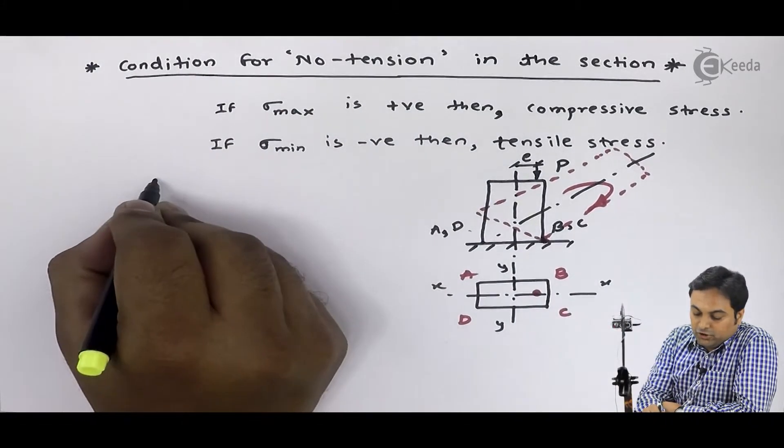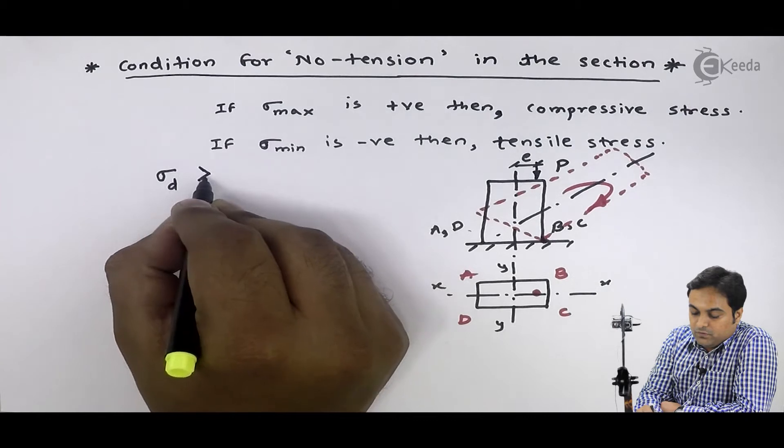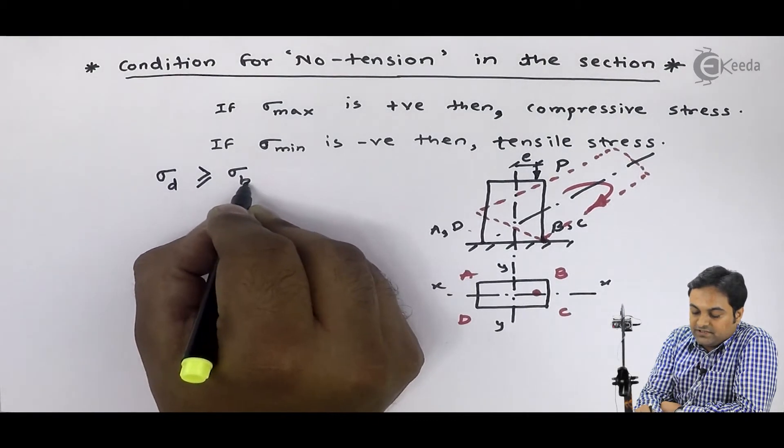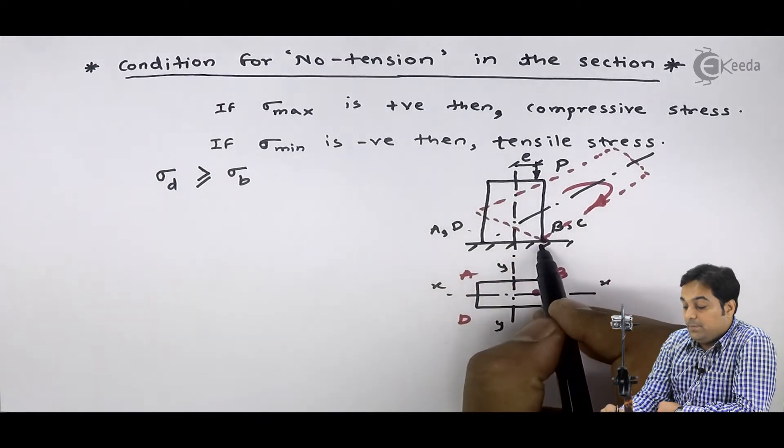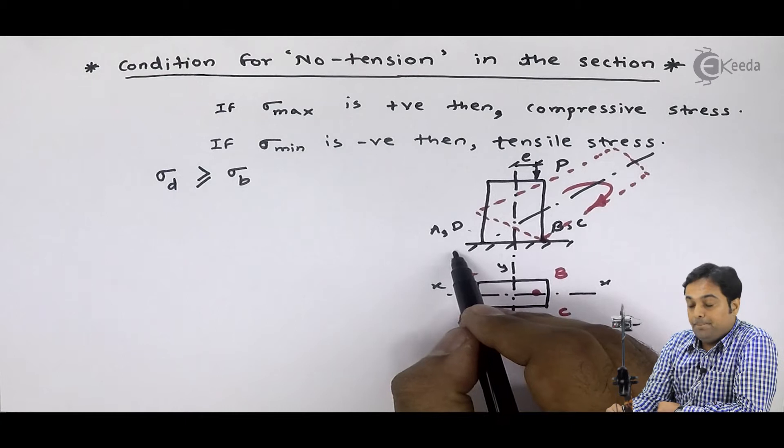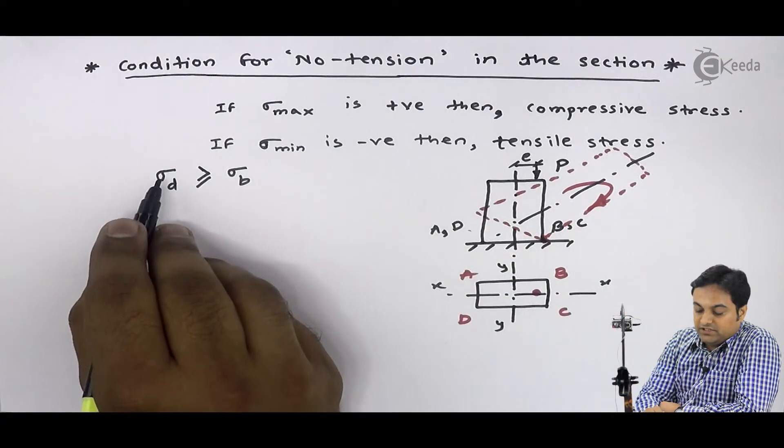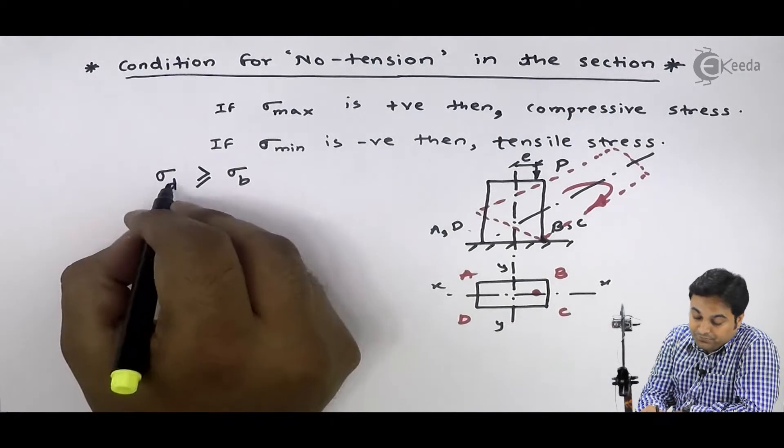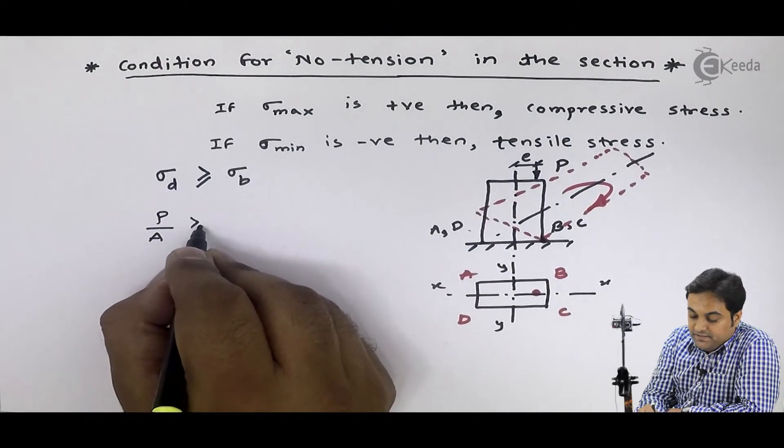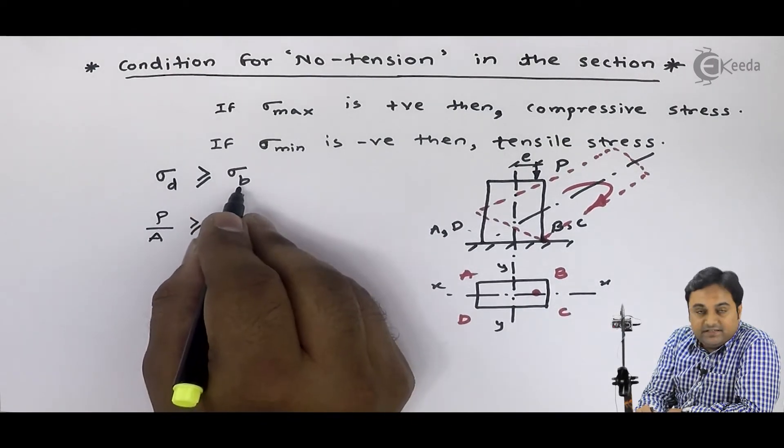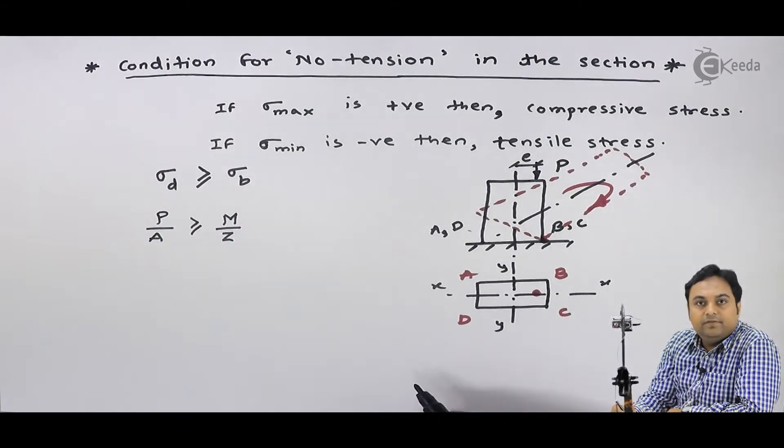So, the condition for no tension is that your direct stress which is compressive, it should be greater than or at the max equal to bending stress. That is, bending stress should be less and direct stress should be more. Because more direct stress, more compression. And ad or bc will be pressed to ground. But, as soon as bending stress is more, there tensile stress comes. Because of that ad gets lifted.